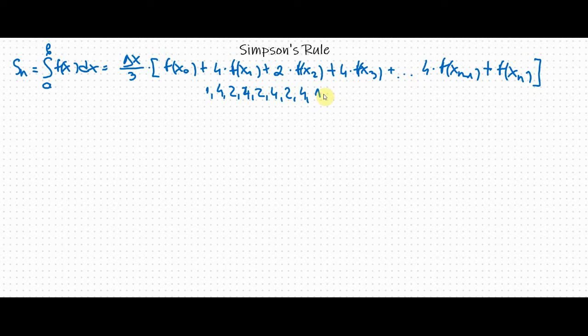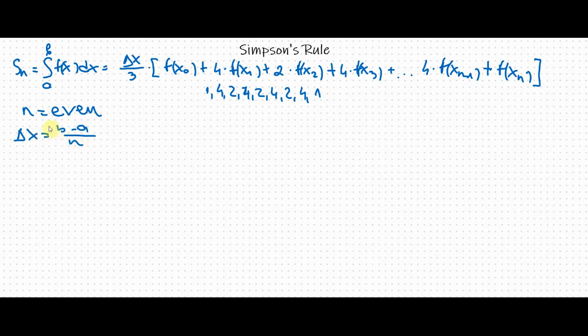Now Simpson's rule will only work if n is an even number. For delta x we have b minus a over n. B and a are from the integral and n is given in the example. Now let's work through our problem.